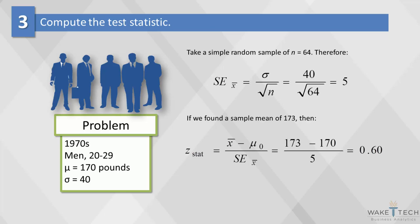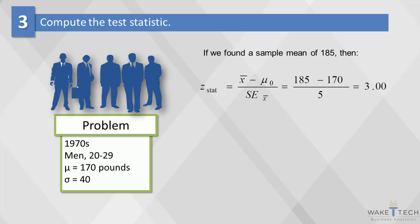Let's say we found the sample mean to be 185. Putting these values into the z-stat formula, we find the z-stat is 3.0. This is much higher at the tail end of the x-axis on a normal distribution.